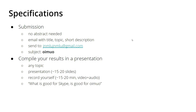So the specifications: just like last year, no abstract is needed. Please email me the title of the presentation you want to do, the topic, and a short description — a couple of sentences will be okay. Send this email to jnmlu at gmail.com, which is the email address associated with my YouTube channel, with the subject OIMUO, so I know that you want to submit a presentation for this event.